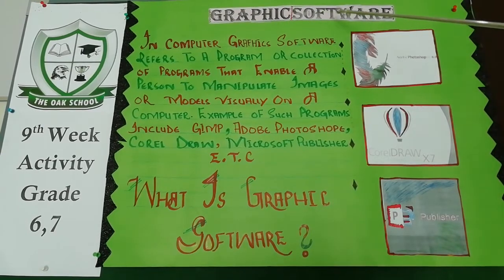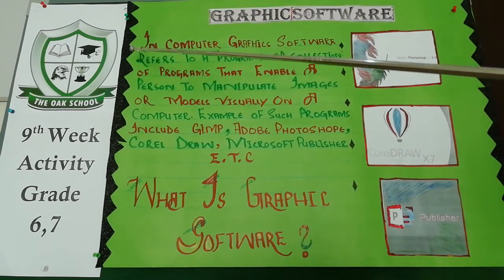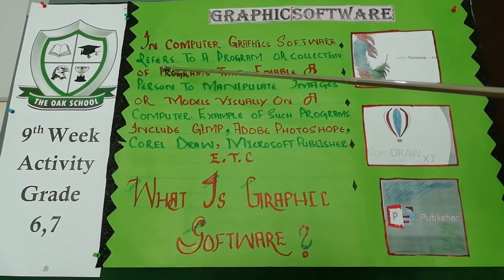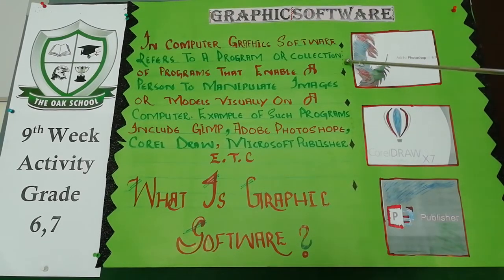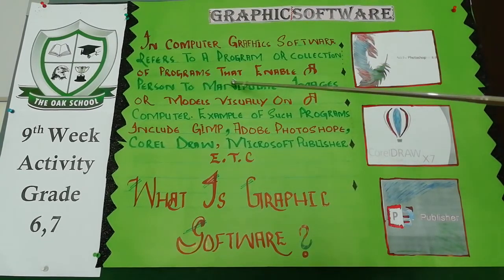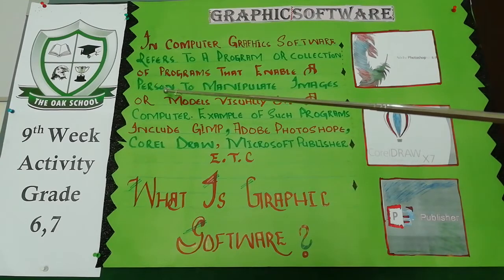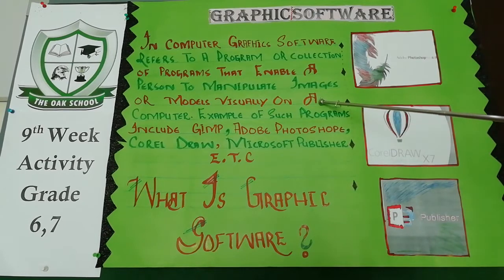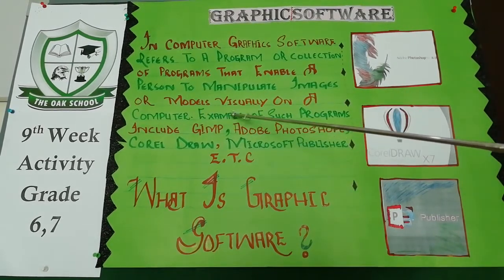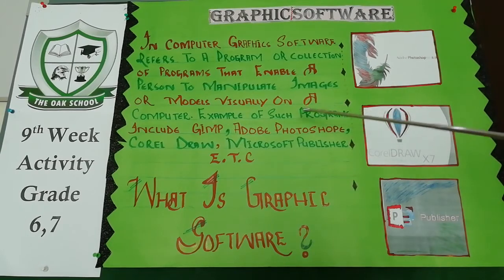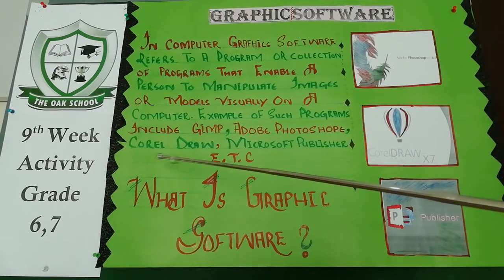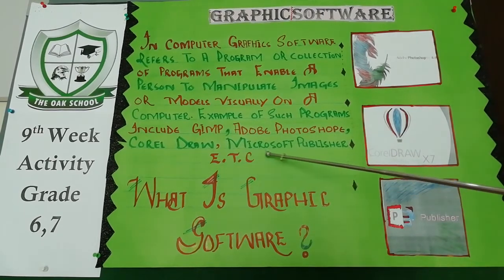Graphic software kisay kaatay hain? So students, in computer, graphic software refers to a program or collection of programs that enable a person to manipulate images or models visually on a computer. For example, such programs include GIMP, Adobe Photoshop, CorelDRAW, Microsoft Publisher, etc.